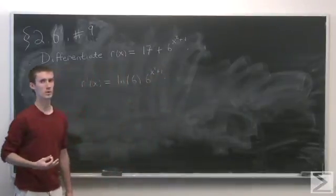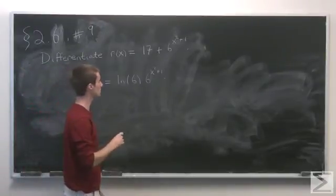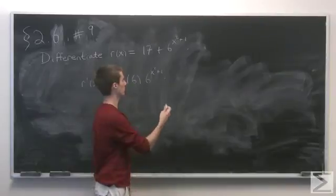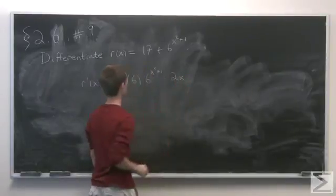And now since we have a chain rule problem where we have x squared plus 1 sitting inside the general exponential function, we need to multiply by the derivative of x squared plus 1, which is just 2x.